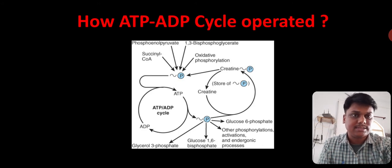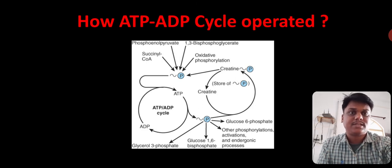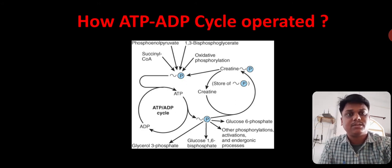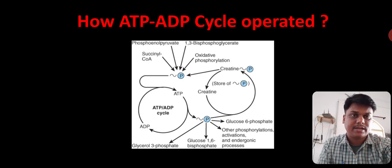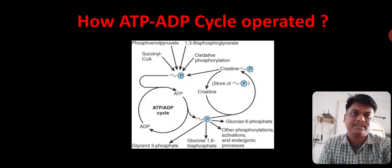And that phosphate is utilized to convert ADP to ATP to operate the ATP-ADP cycle. And that phosphate is then given to the low energy compounds such as glucose-6-phosphate, other pyrophosphorylation reactions, endergonic processes, glucose-1,6-bisphosphate, glycerol-3-phosphate reactions, etc.